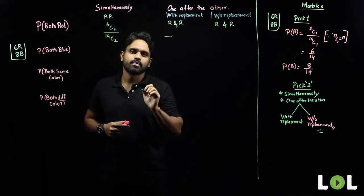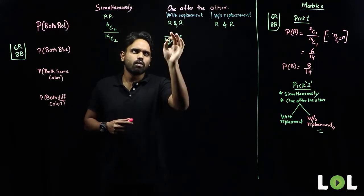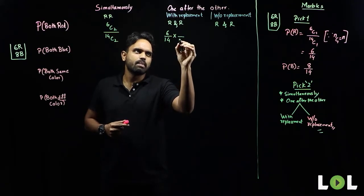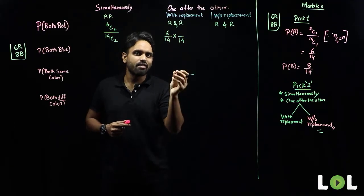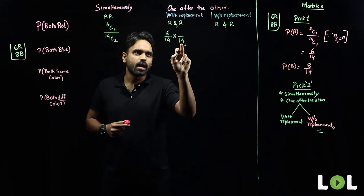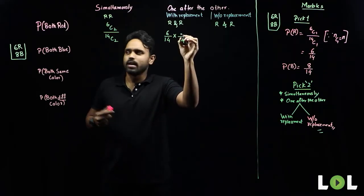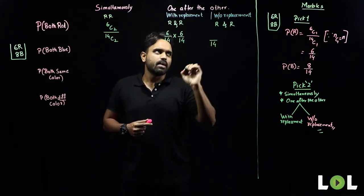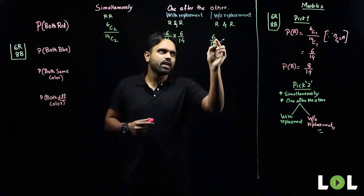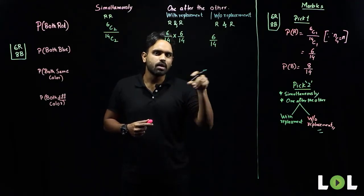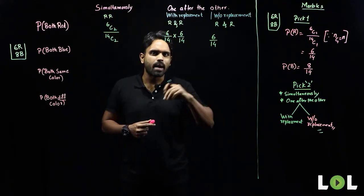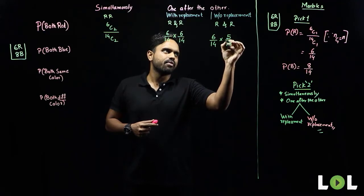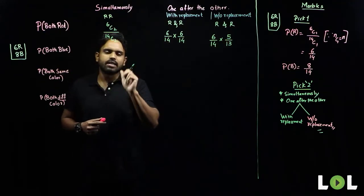For one after the other with replacement: total cases are fourteen, favorable for red is six; and since I replaced the marble back, characteristics remain the same, so total is fourteen again and favorable red is six again. For without replacement: total number of cases is fourteen, favorable cases for red is six; but after dropping the marble outside the bag, total reduces by one — so thirteen total — and favorable cases for red become five.